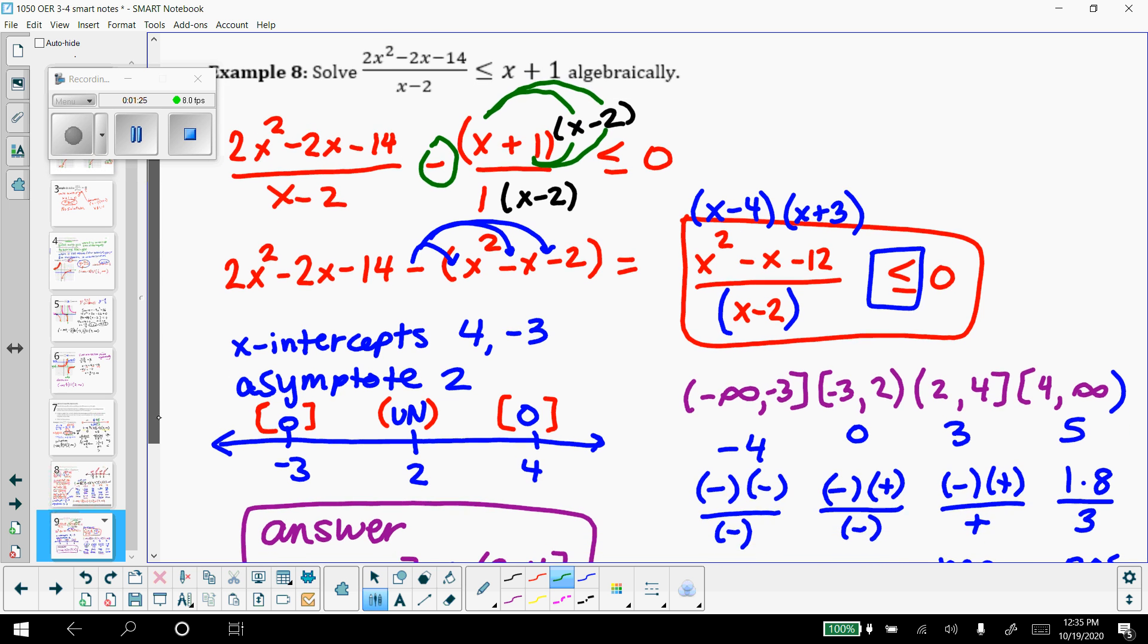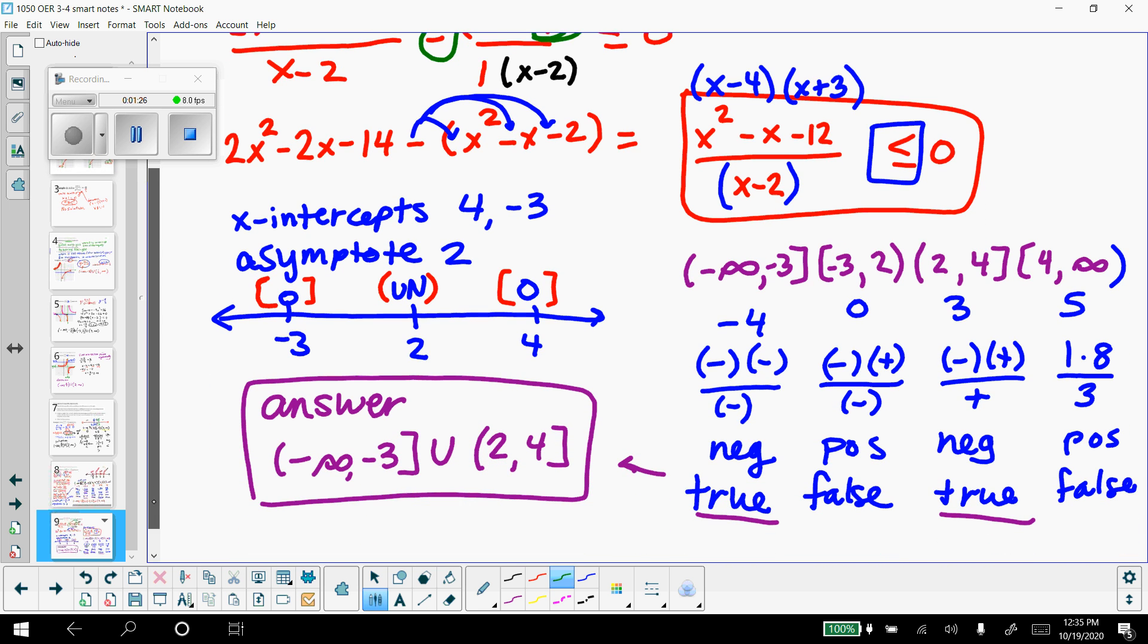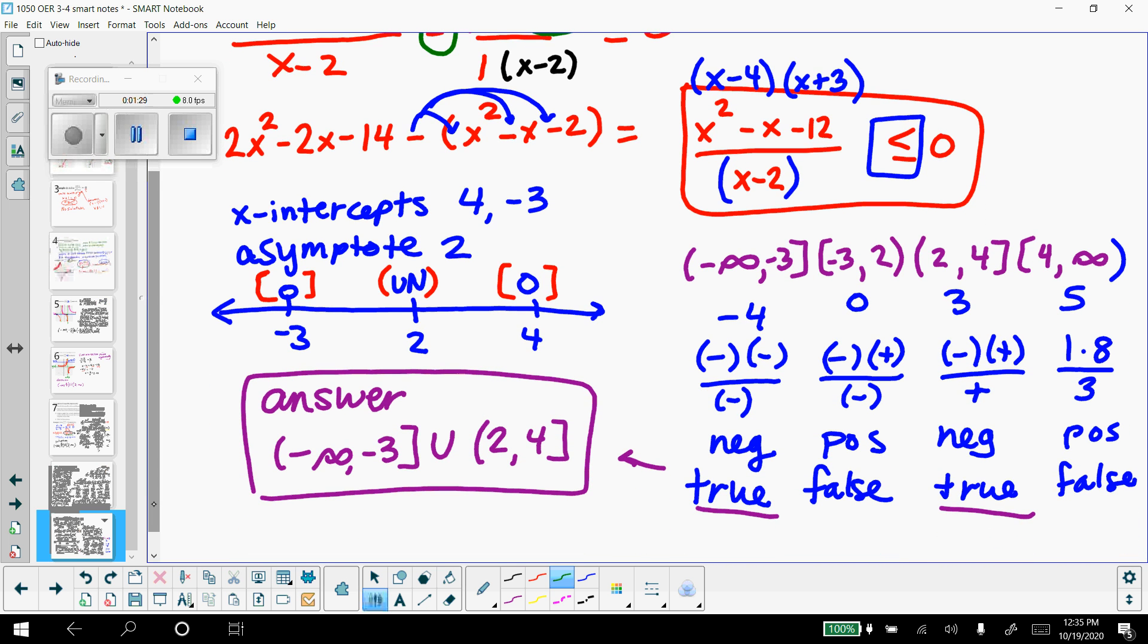Okay, so I've got all that written out over here. Our x-intercepts are at 4 and negative 3, our asymptote is at 2. So the x-intercepts are included points, the asymptote is not included. So you can see brackets here, brackets here, brackets here there.